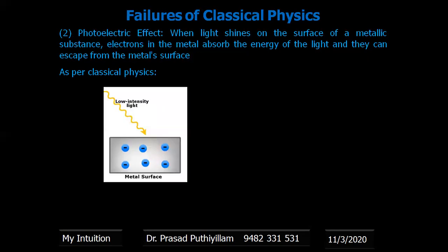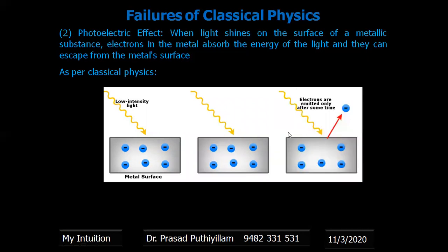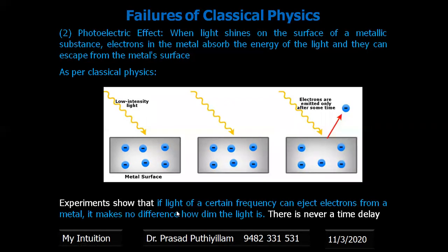As per classical physics, if the energy of light or the light intensity is very low, then it will take time for the electron to absorb the light waves and then emerge. But experiments show that if light of a certain frequency can eject electrons from a metal, it makes no difference how dim the light is.